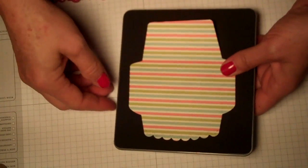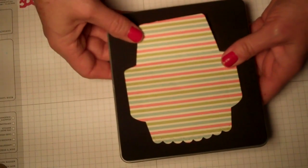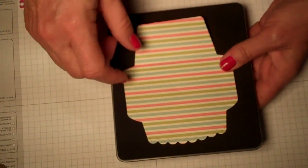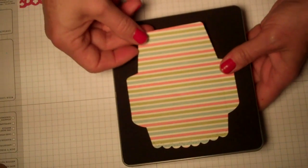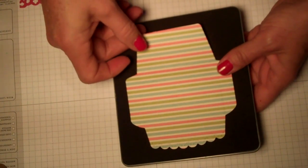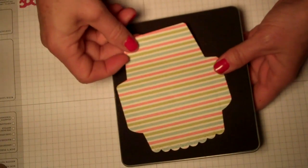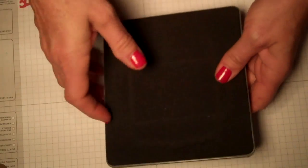It's a sweet die to have in your arsenal. So let's get started. You're gonna need your Big Shot, an acrylic plate, and you're gonna need to have a piece of cardstock to shim with.